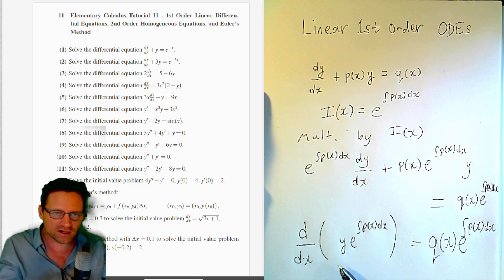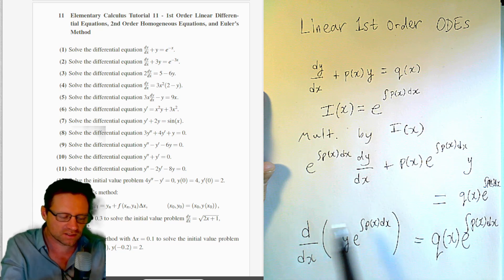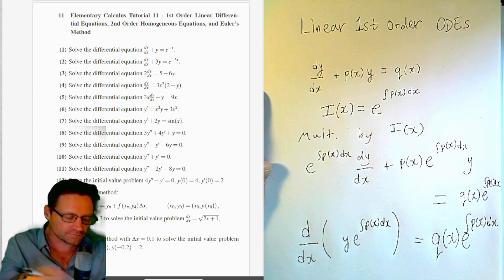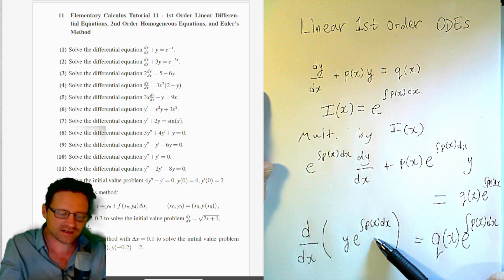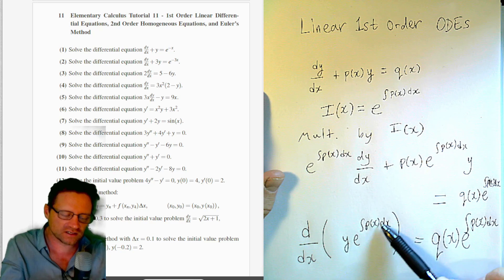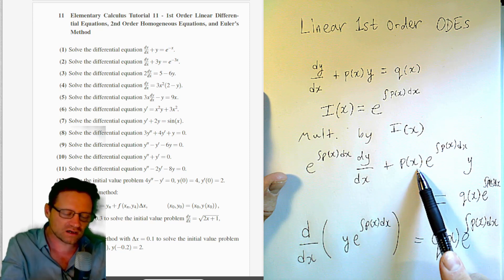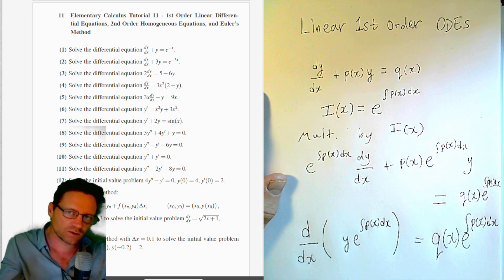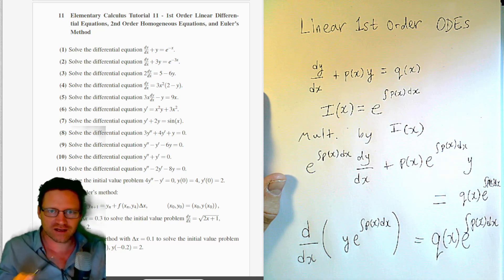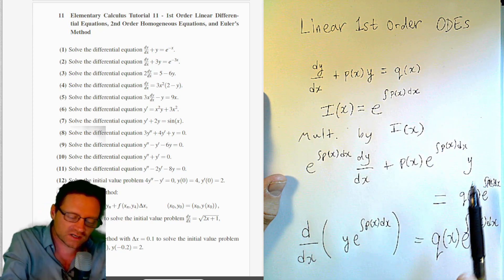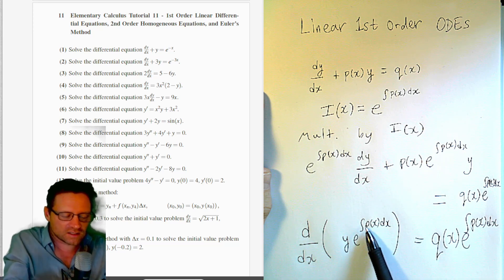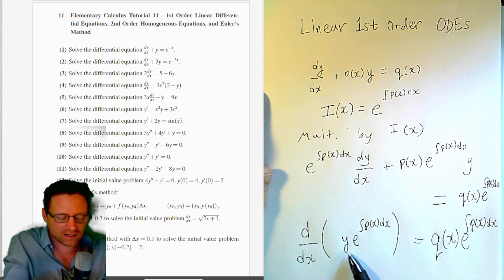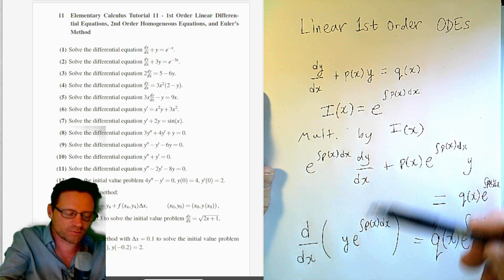The product rule takes one multiplicand and puts it with the derivative of the other. For example, y times the derivative of e to the integral of p(x) dx — by the chain rule, that derivative is p(x) times e to the integral of p(x) dx, letting u equal the integral of p(x) dx. Swapping roles, we pull out e to the integral and differentiate y. So this is simply the product rule in reverse.